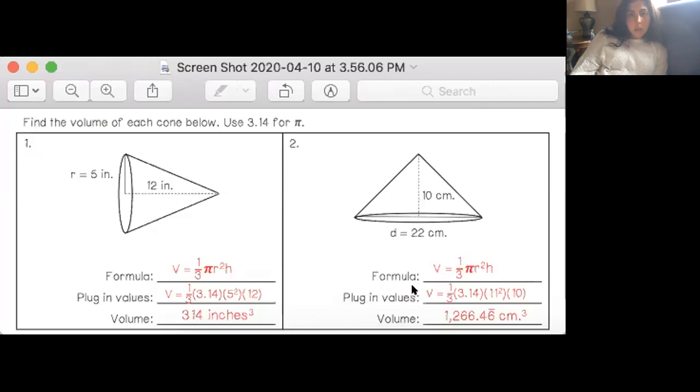So again, we have one third times pi times the radius squared times the height. You should have gotten 1,266.46 centimeters cubed.